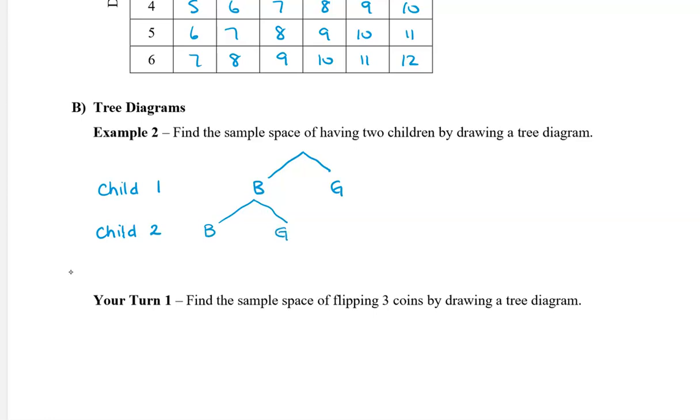If the first one is a girl, then we can also branch off with two branches and have a boy or a girl.